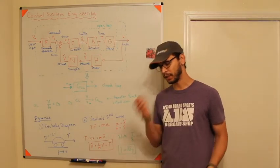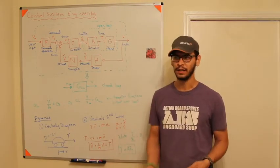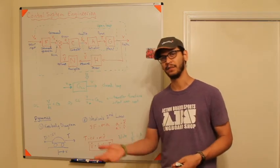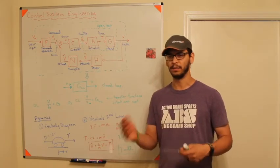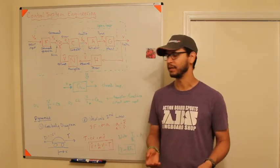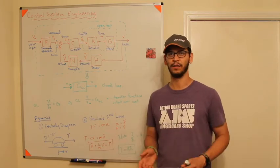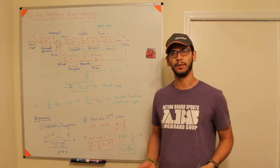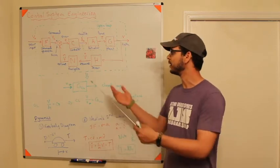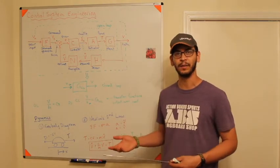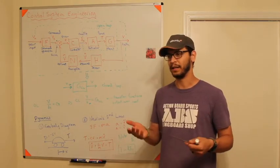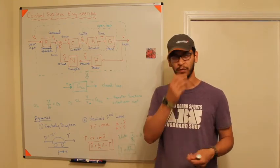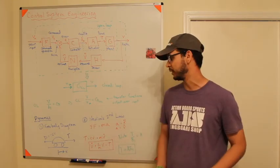That is basically chapter one. The textbook also goes through some history of passive control systems, such as spinning flywheels. I personally don't think it's important to cover that in a classroom setting — it's something you can easily read on Wikipedia or in the textbook at your leisure.